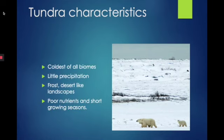The tundra is one of the coldest biomes. It has an average winter temperature of minus 34 degrees Celsius. Can you imagine what this temperature would feel like? The average summer temperatures are between 3 and 12 degrees Celsius, which is still quite cold.